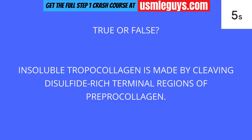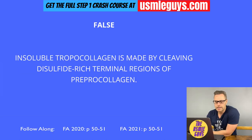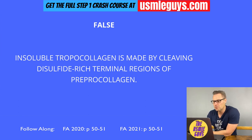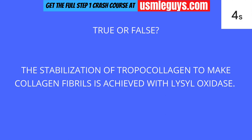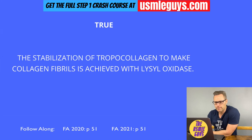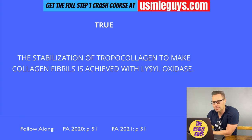Next question — this is false. The formation of pro-collagen involves hydrogen and disulfide bonds — and disulfide bonds are covalent bonds. Next question — this is false because tropocollagen is made by cleaving disulfide-rich regions of procollagen, not pre-procollagen. Pre-procollagen is the structure in the cytoplasm prior to hydroxylation and glycosylation steps. Final question — this is true: the copper-containing lysyl oxidase reinforces tropocollagen by forming covalent cross-linkages of lysine and hydroxylysine to make collagen fibrils.